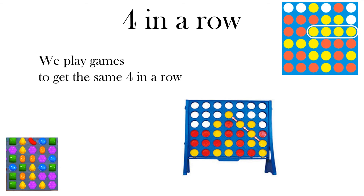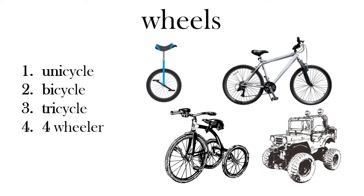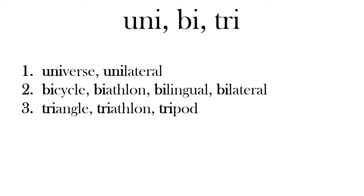We use terms where the beginning tells us how many something refers to. For one, we have words like 'uni' — unicycle has one wheel. 'Bi' gives us bicycle with two wheels, and 'tri' gives us tricycle with three wheels. So words like universe, unilateral, bicycle, biathlon, bilingual, bilateral, triangle, triathlon, and tripod all have prefixes telling us if they refer to one, two, or three things.